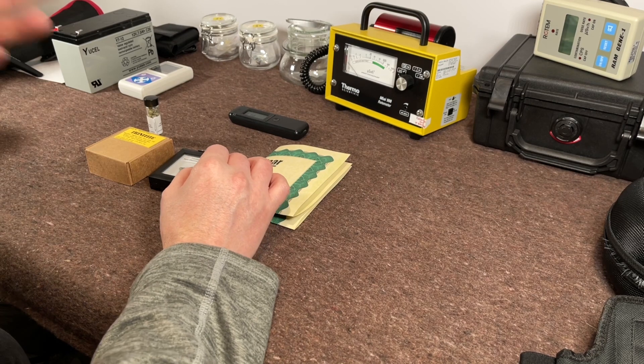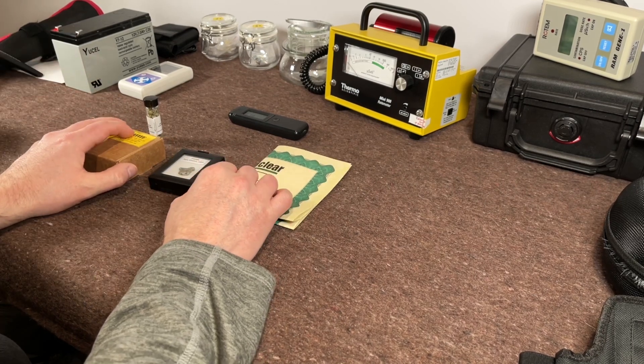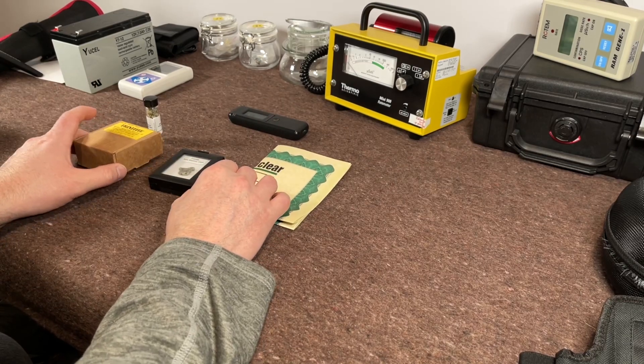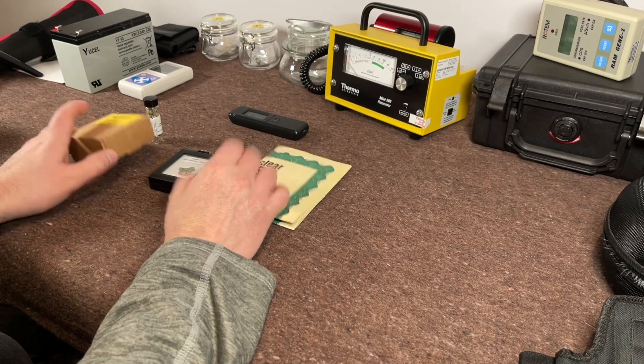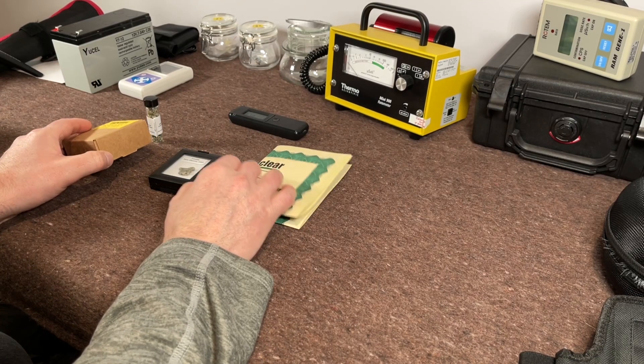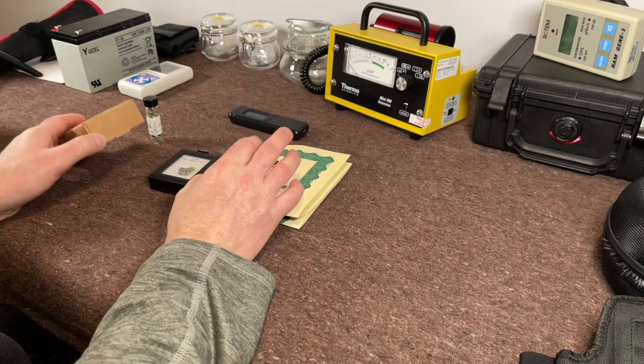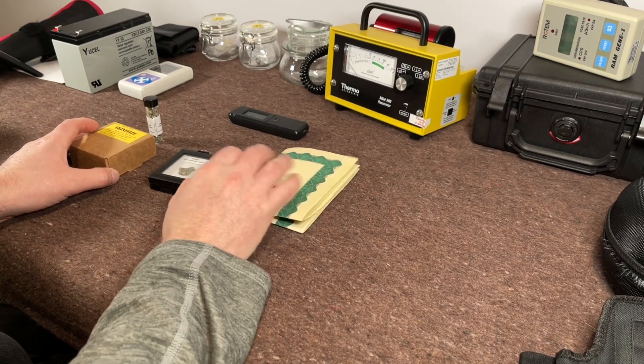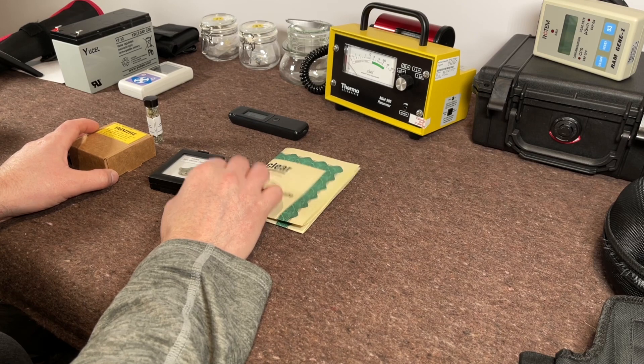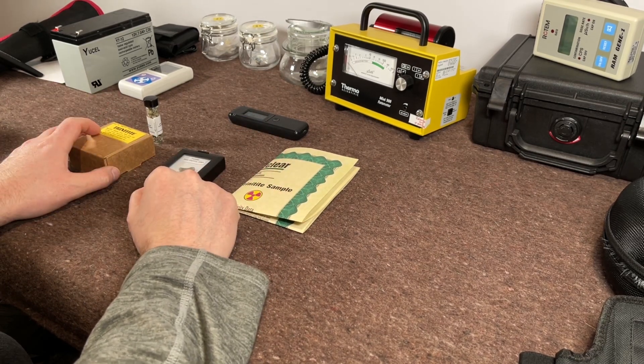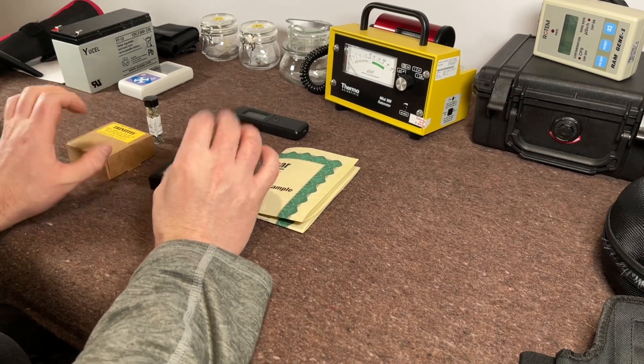Going back, talking about the Trinity experiment with the gadget as it was called, the world's very first atomic bomb, 25 kilotons of TNT. Obviously bigger than the explosions that went off in Hiroshima and Nagasaki a few months later. But I have here a couple of little bits of Trinitite anyway.